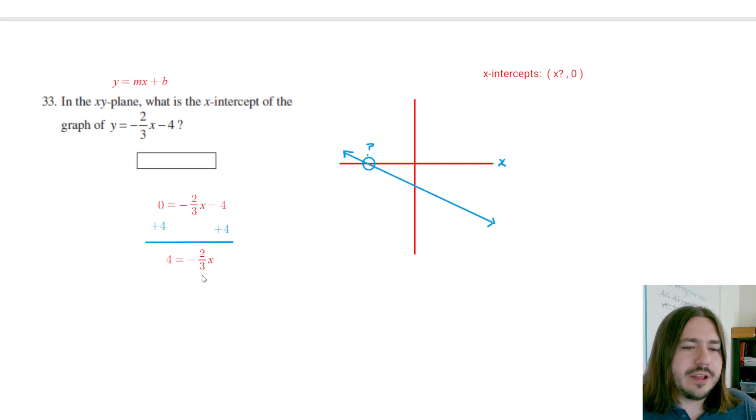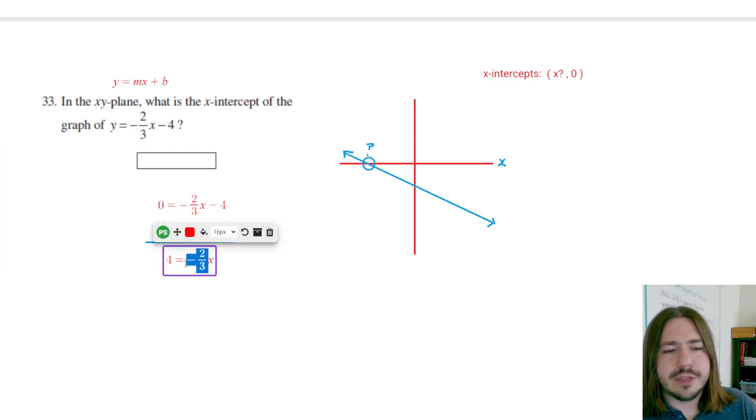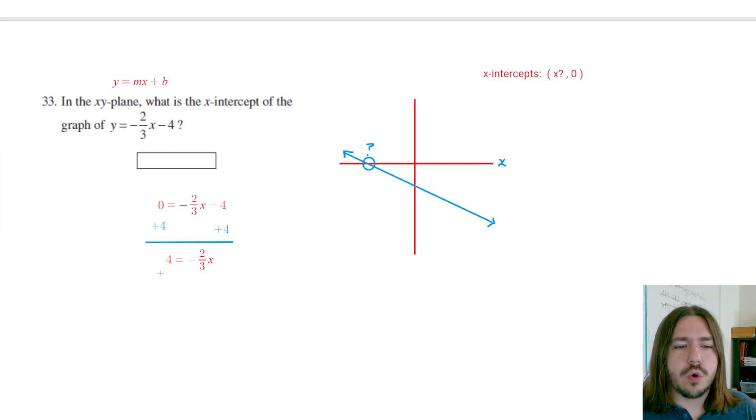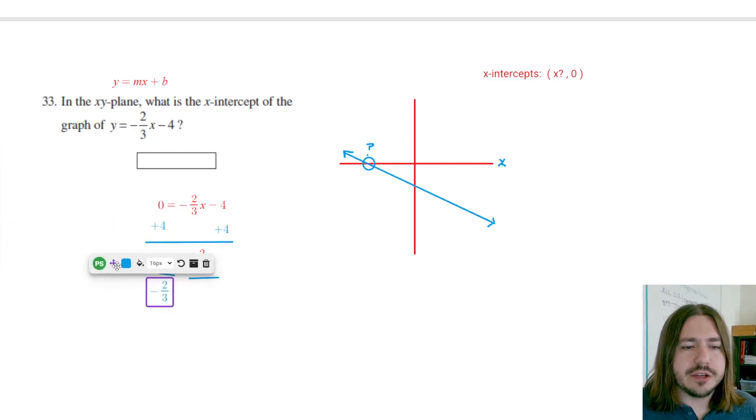So now here you've got a couple options on how you want to isolate that x. If you're using a calculator, and I definitely recommend that, then you can just go ahead and divide both sides by negative two-thirds and not worry too much about getting the arithmetic right. You can just let the calculator handle that for you. So here I'm going to divide both sides by negative two-thirds. And that's just something I'm going to type in the calculator. I'm not going to do four divided by negative two-thirds in my head.